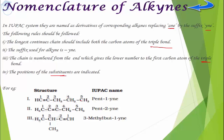For example, we start numbering from the end closer to the triple bond. With five carbons, the triple bond at position 1 gives pent-1-yne, and at position 2 gives pent-2-yne. If there is a substituent, for instance a methyl group at position 3 with a four-carbon chain and triple bond at position 1, it is named 3-methyl-1-butyne. Both prefix and suffix position notation are acceptable.